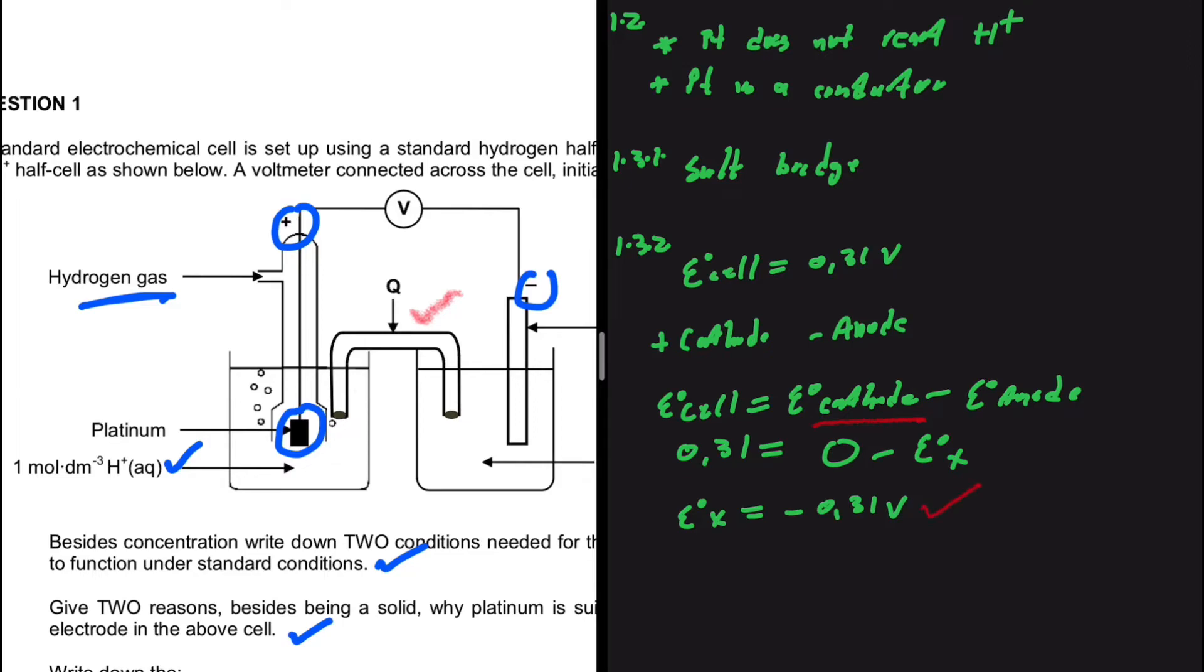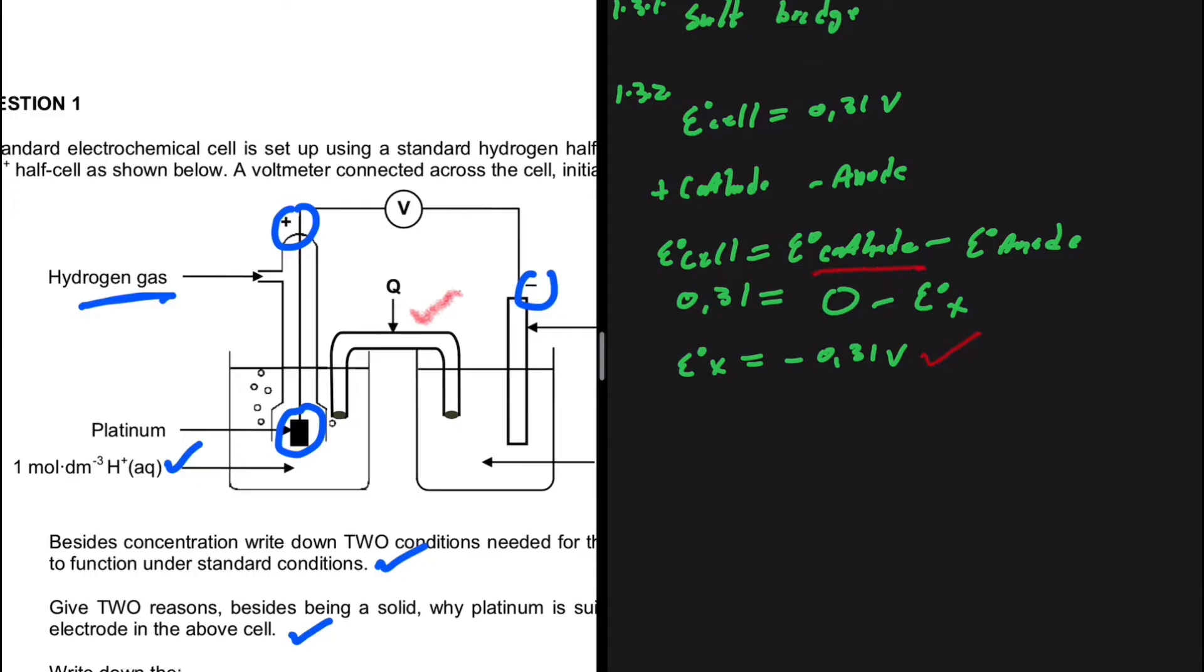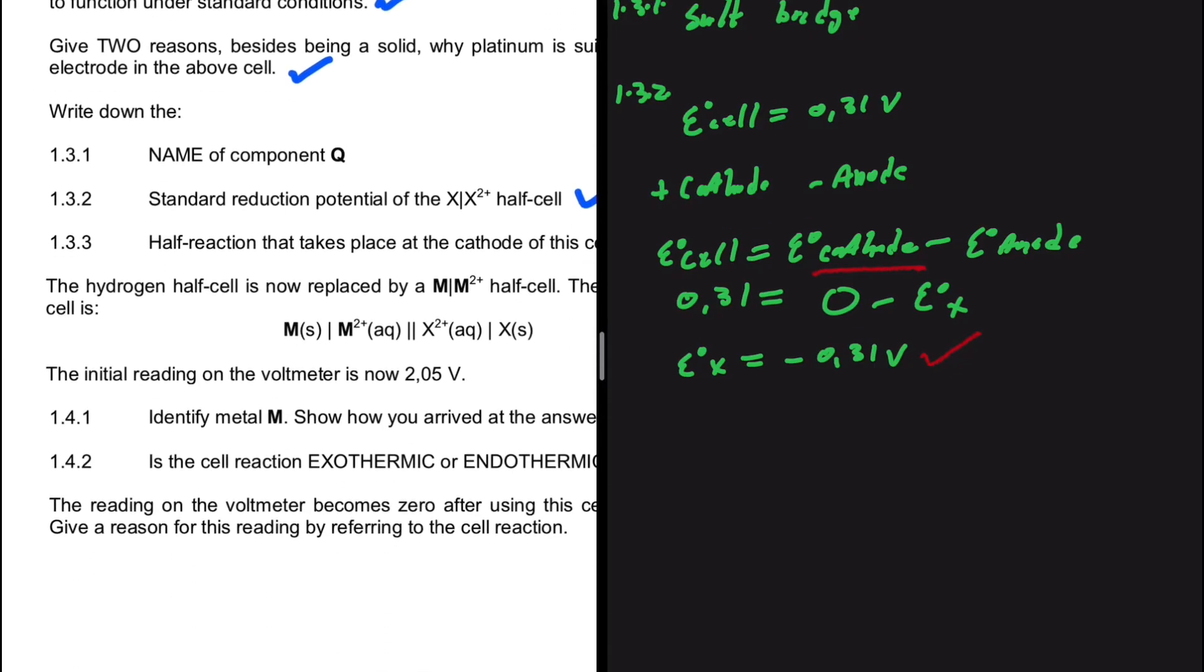So minus the potential at the anode, which happens to be X. If you go ahead and find the reduction potential of X, you're going to realize that it is equals to minus 0.31 volts. So this is the answer.